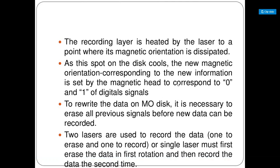The recording layer is heated by the laser to a point where the magnetic orientation is dissipated. At that spot on the disc, a new magnetic orientation corresponding to new information is stored. When you want to remove data already on the disc and write something new, you put a new magnetic orientation corresponding to zero or one — simply rewriting the data. It is necessary to erase all previous signal before new data can be recorded. For this, two lasers are used: one to erase and one to record, or a single laser is first used to erase in one orientation and then write the new data.